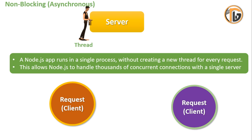This allows Node.js to handle 100,000 concurrent connections with a single server. It is called a single server with concurrent connections, which handles each request efficiently.